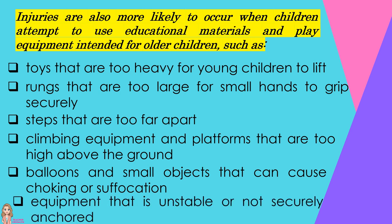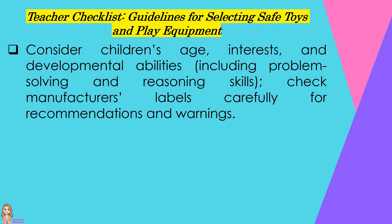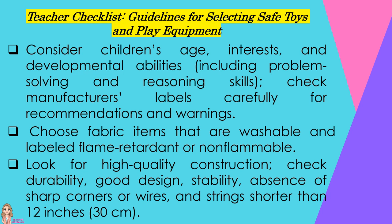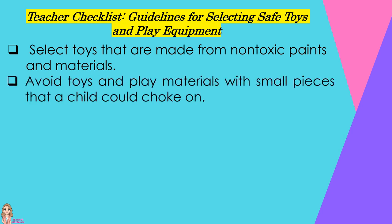Guidelines for selecting safe toys and play equipment: Consider children's age, interests, and developmental abilities including problem-solving and reasoning skills. Check the manufacturer's label carefully for recommendations and warnings. Choose fabric items that are washable and labeled flame retardant or non-flammable. Look for high-quality construction — check durability, good design, stability, absence of sharp corners or wires, and strings shorter than 12 inches or 30 cm. Select toys that are made from non-toxic paints and materials. Avoid toys and play materials with small pieces that a child could choke on.